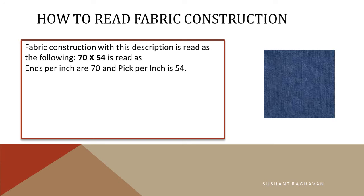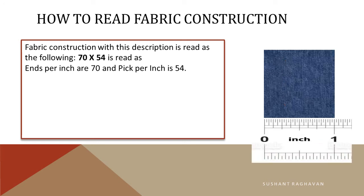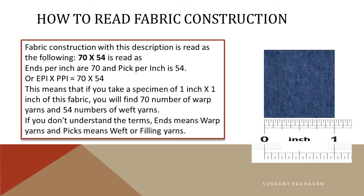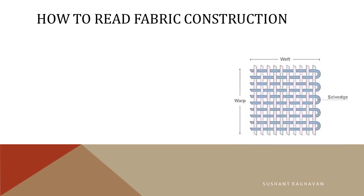70x54 is read as: ends per inch (EPI) are 70 and picks per inch (PPI) is 54, or EPI x PPI = 70x54. This means that if you take a specimen of 1 inch by 1 inch of this fabric, you will find 70 numbers of warp yarns and 54 numbers of weft yarns. Note: 'ends' means warp yarns and 'picks' means weft or filling yarns.